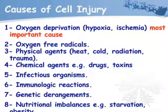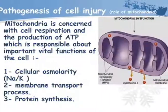Causes of cell injury include: oxygen deprivation — hypoxia and ischemia — which is the most important cause; oxygen free radicals; physical agents like heat, cold, and radiation; chemical agents like drugs and toxins; infectious organisms; immunological reactions; genetic derangements; and nutritional imbalances such as starvation and obesity.